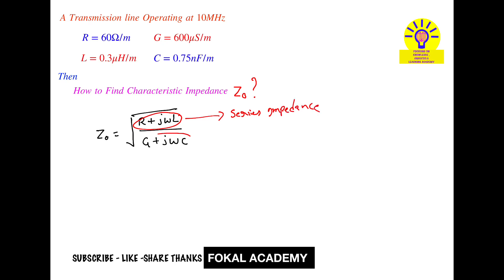Here, R + jωL is called the series impedance, and G + jωC is called the shunt admittance. So first, we'll find the series impedance and shunt admittance, then we can easily find the characteristic impedance.